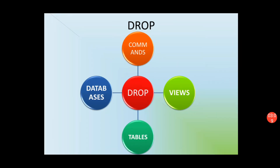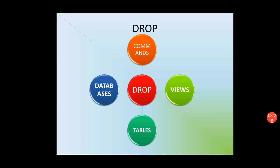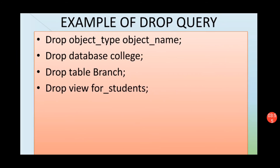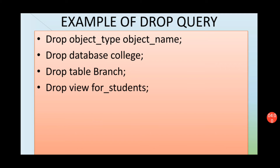Similarly, if you want to drop any of the objects, the command that will be used is the DROP command. Using DROP, we can drop a database, we can drop any table, or we can drop any view. DROP essentially means deleting any of the objects. The format is: DROP object_type object_name. For example, to drop the database named 'college': DROP DATABASE college.